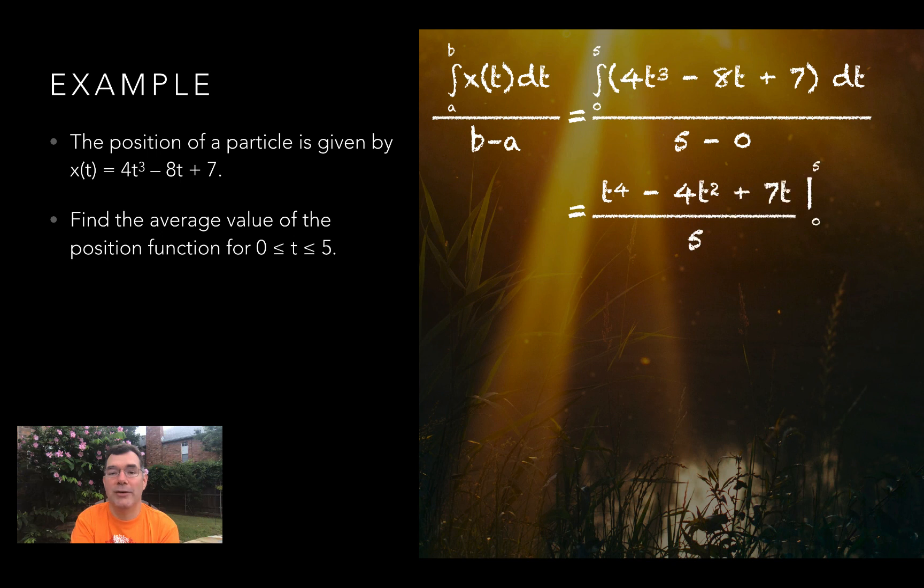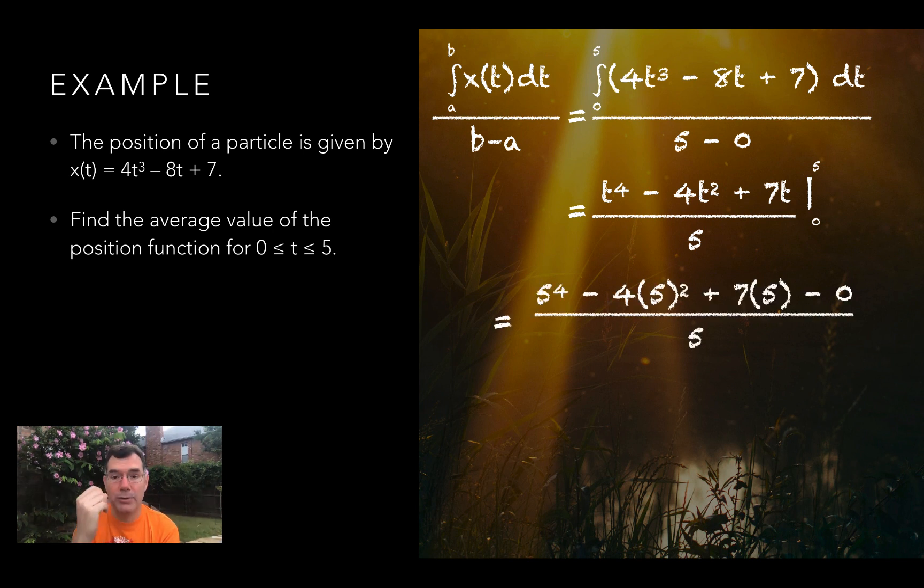The antiderivative of that function is t to the 4th minus 4t squared plus 7t. I'm going to evaluate that at t equals 0 and t equals 5, and then divide by 5. Plugging in 5, I get 5 to the 4th minus 4 times 5 squared plus 7 times 5 minus 0, because when I plug 0 into that function, all the terms become 0, and all of that goes over 5.